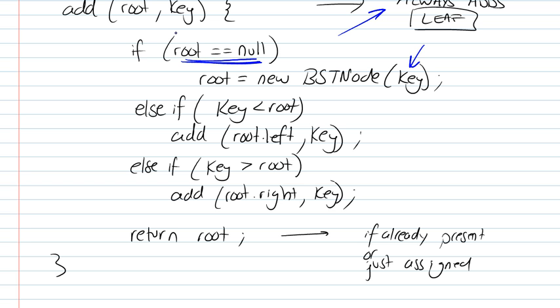So first, if your tree is empty, it's directly going to go to this condition, it's going to come out to be true, and so you're going to create a new key. So we're creating a new BST node, and returning it, and we're going to be assigning it to root, and returning root.